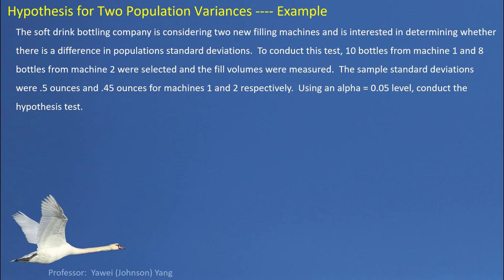Here's an example. A soft drink bottling company is considering two new filling machines and is interested in determining whether there is a difference in population standard deviation. To perform the test, 10 bottles from machine 1 and 8 bottles from machine 2 were selected and the fill volumes were measured. The sample standard deviations were 0.5 ounces and 0.45 ounces for machine 1 and 2 respectively. We use a significance level of 5%.